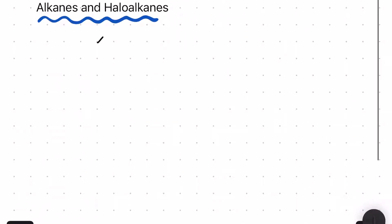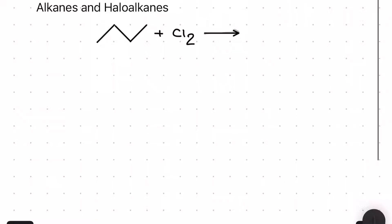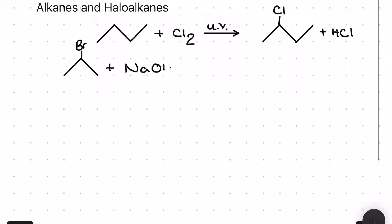For this next category I'm pairing together the alkanes and the haloalkanes. For the first reaction I'm taking an alkane and reacting it with a halogen — chlorine in the presence of UV light — to make a haloalkane, specifically 2-chlorobutane, and a hydrogen halide of HCl. Look out for the radical substitution mechanism that goes with this reaction as it's really important.